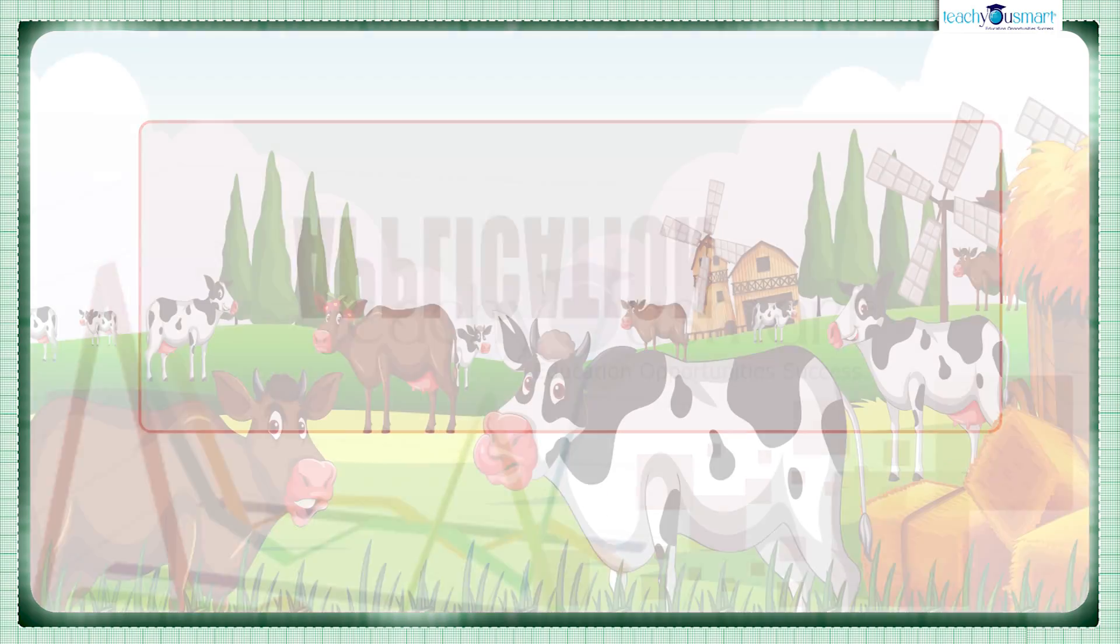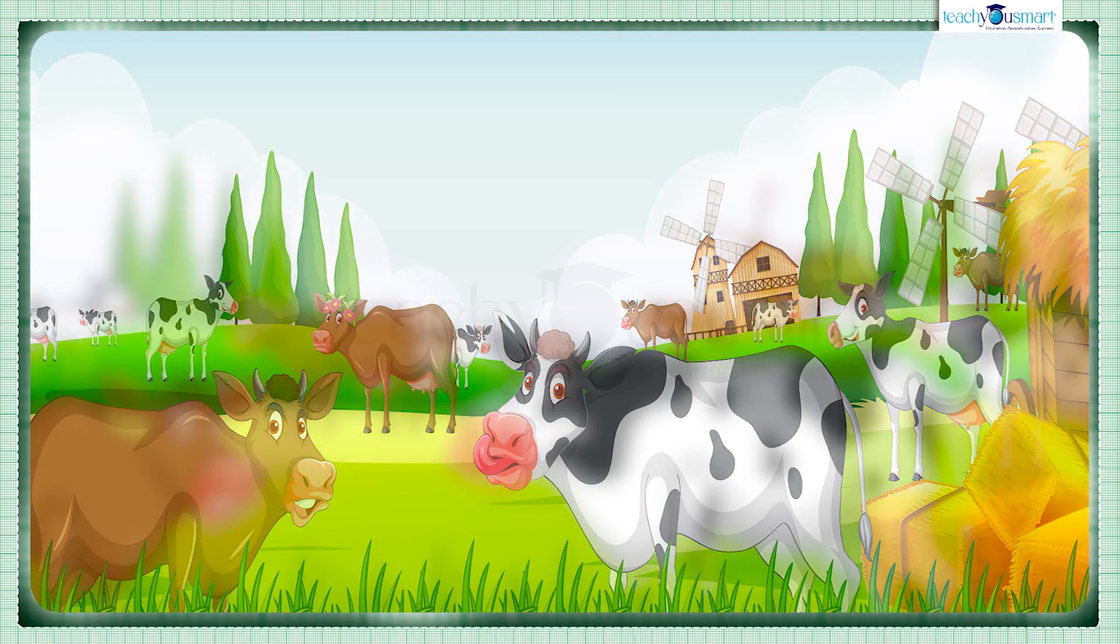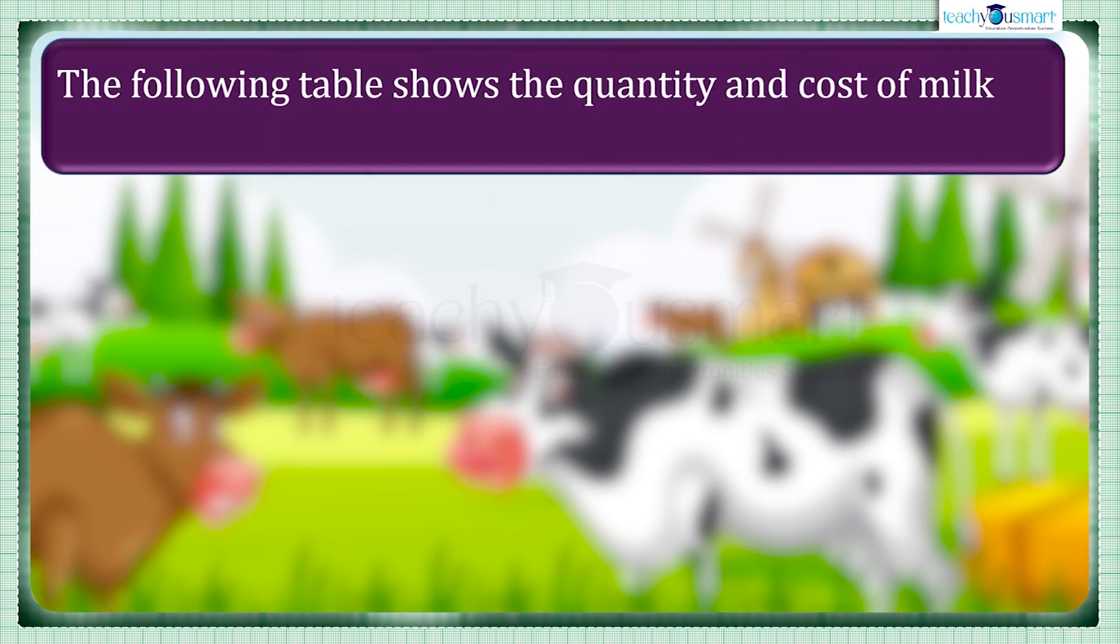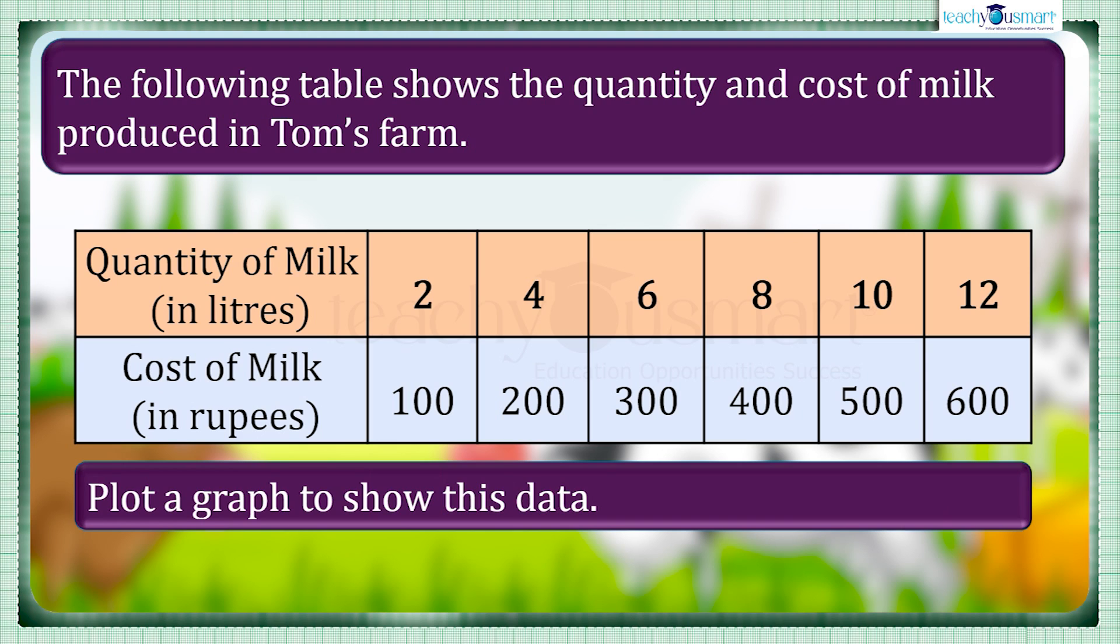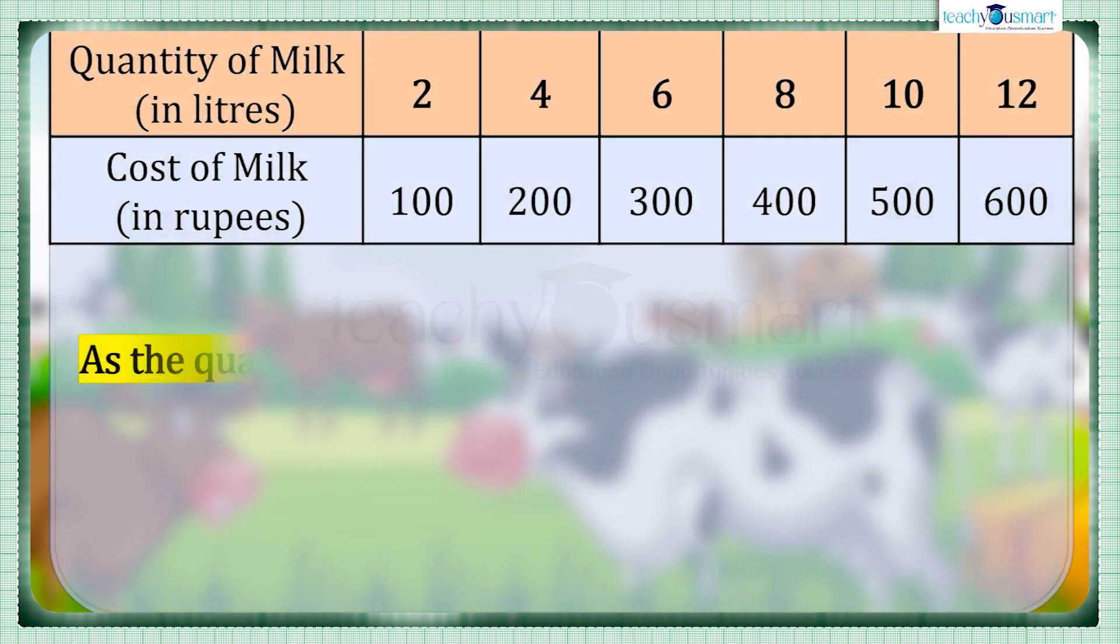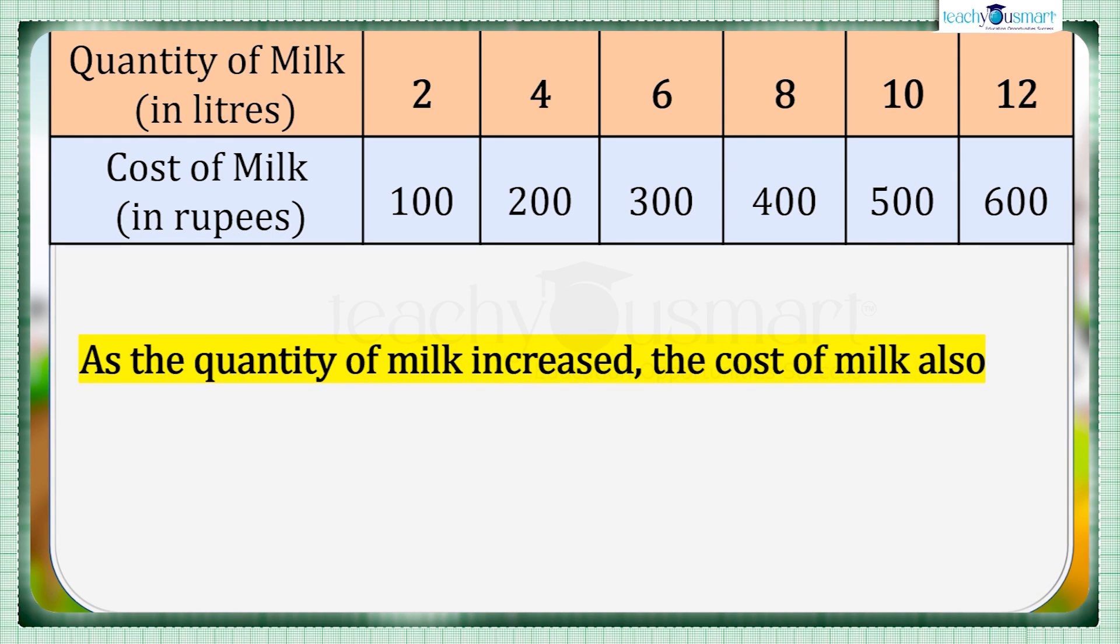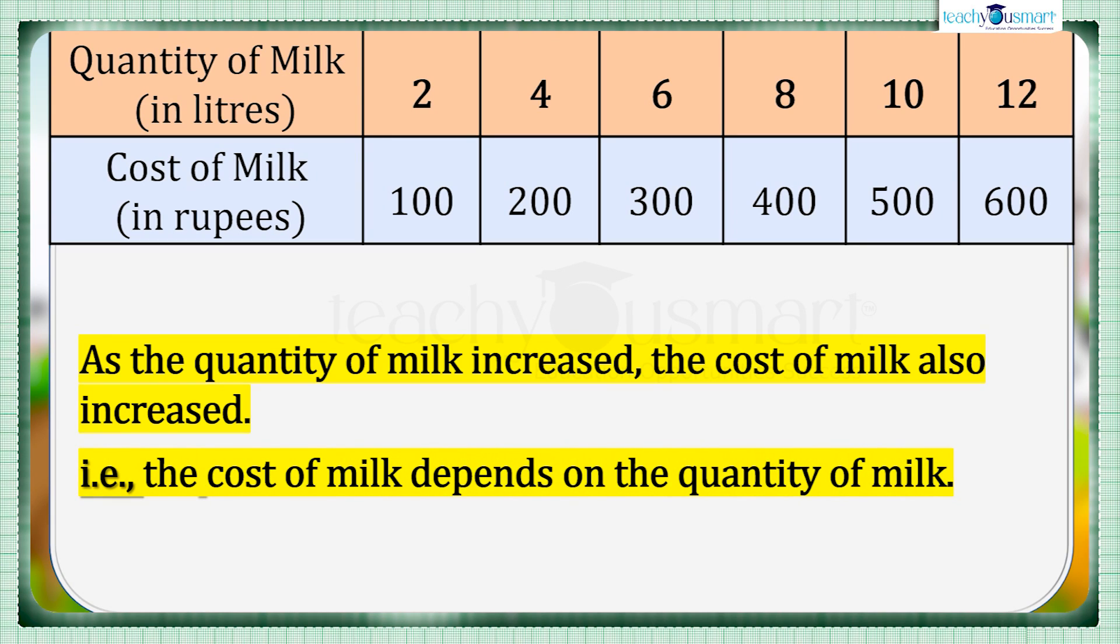Tom started a new business on dairy farm. The following table shows the quantity and cost of milk produced in Tom's farm. Plot a graph to show this data. Here we can see as the quantity of milk increased, the cost of milk also increased. That is, the cost of milk depends on the quantity of milk.